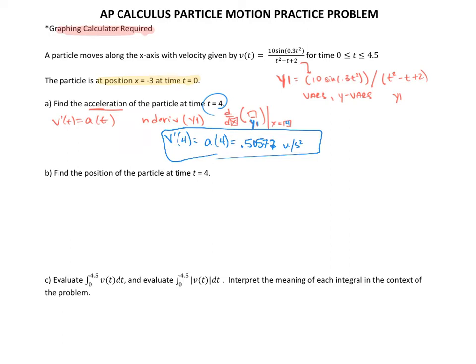Moving on to part b. Find the position of the particle at time t = 4. For the position, we're going to need s(t). Our position is s(t), or you can call it x(t). To get the position given a velocity, we have to integrate the velocity. But don't forget we are given an initial position, plus the initial position. We have to add this initial value that we were given at time t = 0.